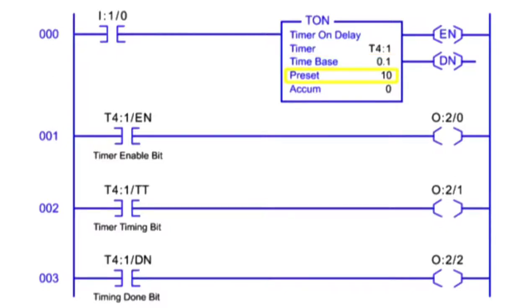The preset value is the time duration of the timer circuit. The preset value sets the time the timer will accumulate to. The accumulated value is the time incremented as the timer is timing.